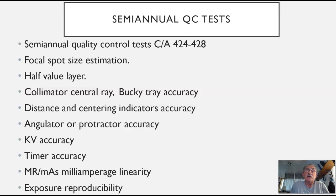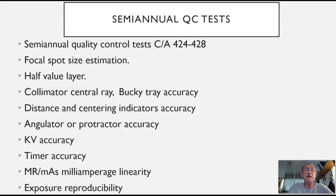Semi-annual quality control tests — a complete list is in Carlton and Adler on pages 424 through 428. Semi-annual tests include focal spot size estimation. We typically have two focal spots in clinical use, both a small and a large focal spot. Focal spot size estimation is not something technologists typically do — this is more for the quality control technologist or physicist on a semi-annual basis. The half value layer determines how much aluminum filtration is required to cut the intensity of the beam in half, giving us some sense of the output of our tube.